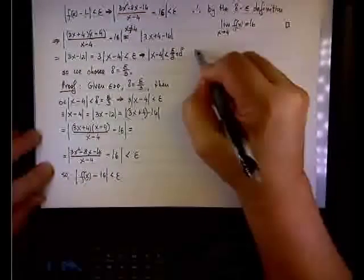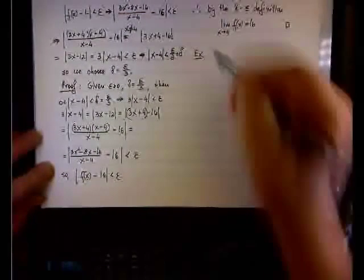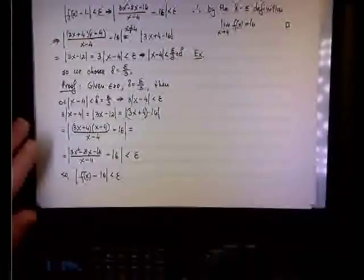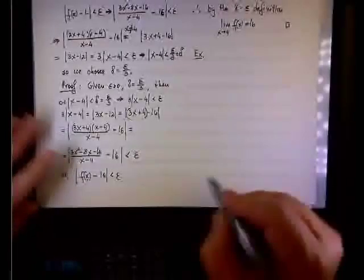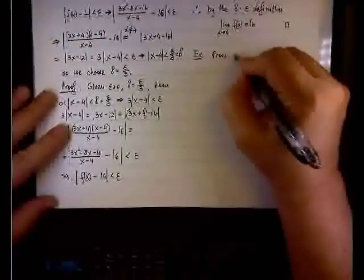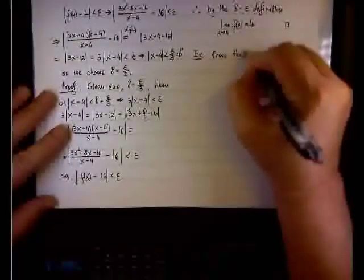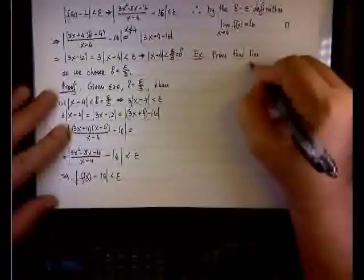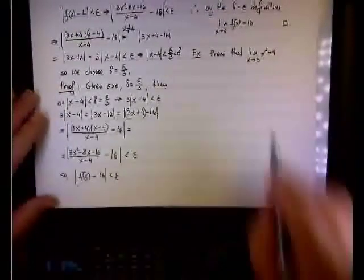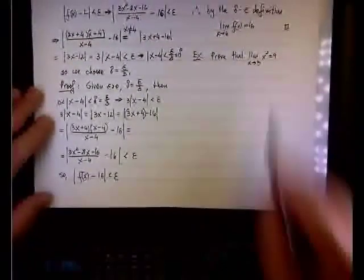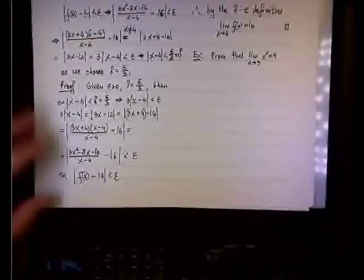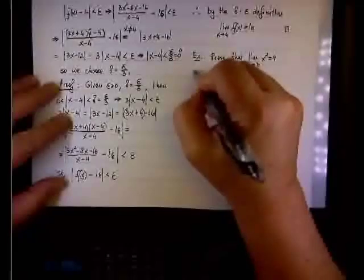Another example — a somewhat dire one that on the face of it does not make sense, but once you see the solution you'll understand why I chose it. Let's prove that the limit as x approaches 3 of x squared equals 9. You can see why I was hesitating a little bit, because I can do direct substitution and evaluate it as 9 — but let's do the formal part.